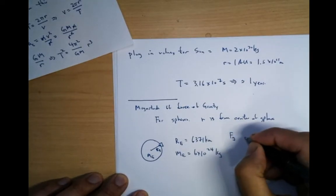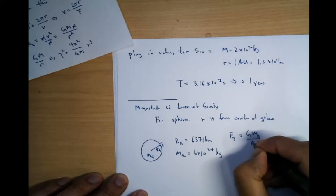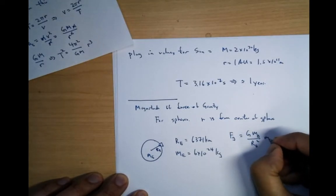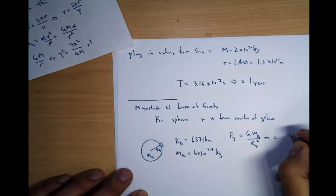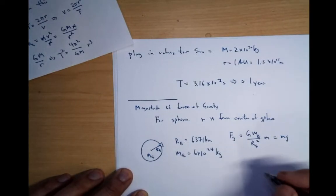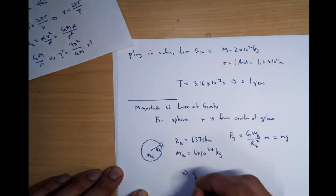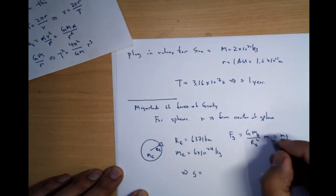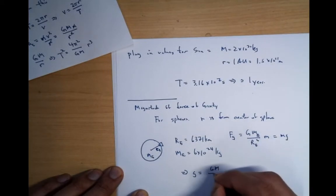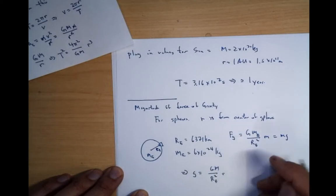So the force of gravity is equal to g m e over r e squared times the mass, which should be basically m times g. So we can just check this real quick. So that implies that g should be equal to, cancel the m, g M over r e squared.